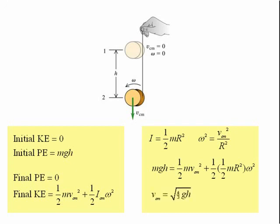Rearranging that equation and simplifying, we end up with the velocity of the center of mass equal to the square root of 4 divided by 3 times the acceleration due to gravity times h, the distance that the yoyo has unwound.